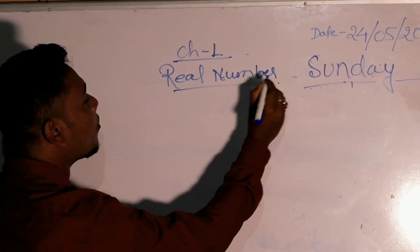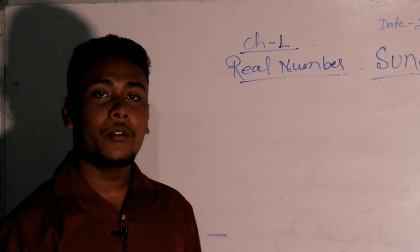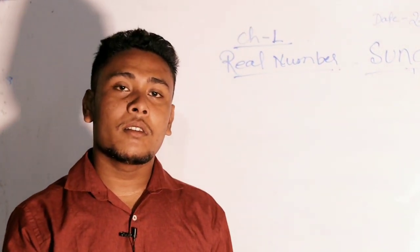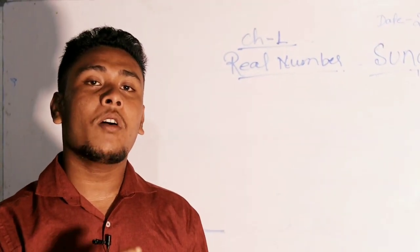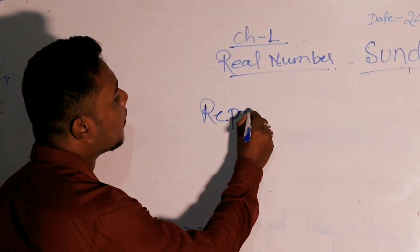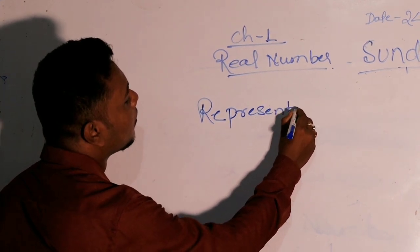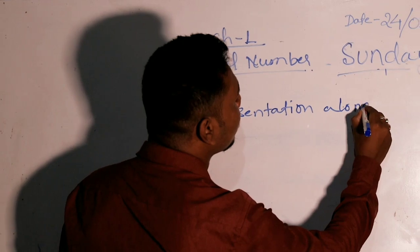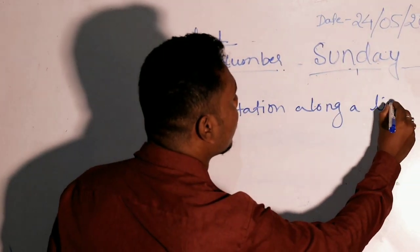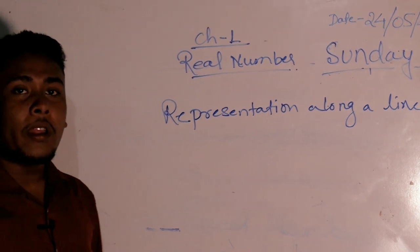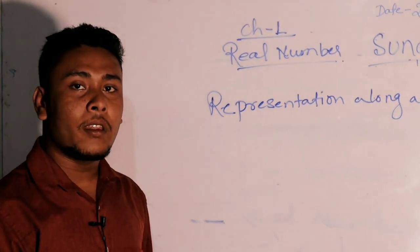Real numbers - so what do you understand by the word real number? Real number is something that represents along a line. Representation along a line is what we say real number. So how to identify real numbers?